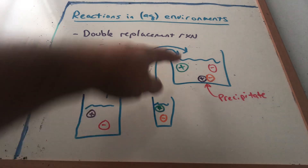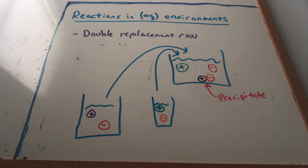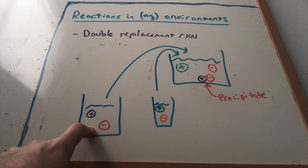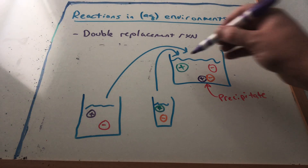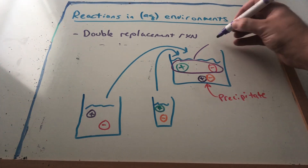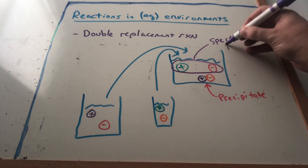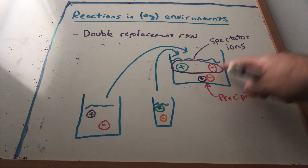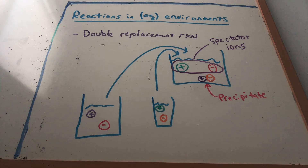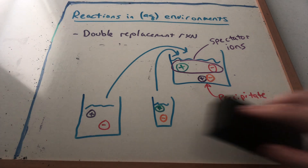If green and red just float away from each other — a red floating by itself before and after, a green floating by itself before and after — these are what we call spectator ions. They're not involved in any change at all, just watching the actual chemistry, like a spectator at a sporting event.